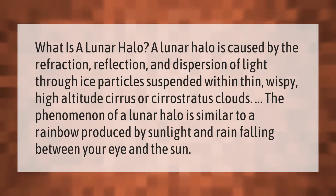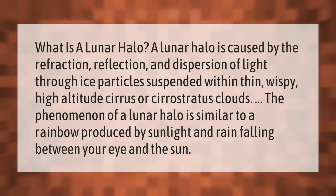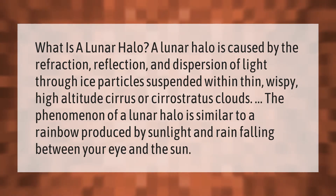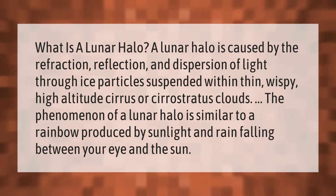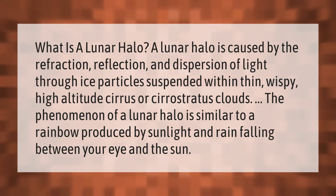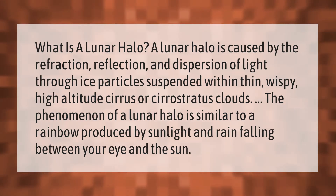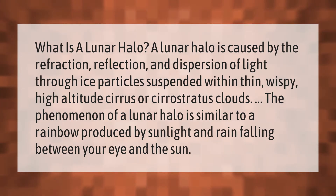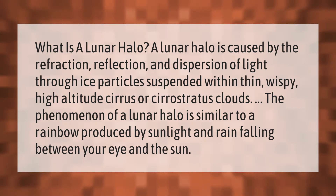What is a lunar halo? A lunar halo is caused by the refraction, reflection, and dispersion of light through ice particles suspended within thin, wispy, high-altitude cirrus or cirrostratus clouds. The phenomenon of a lunar halo is similar to a rainbow produced by sunlight and rain falling between your eye and the sun.